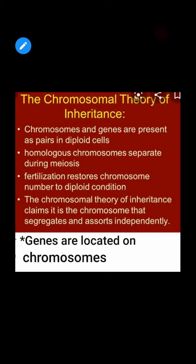Let's discuss the points of the chromosomal theory of inheritance. The first point is that chromosomes and genes are present as pairs in diploid cells — chromosomes always appear in homologous pairs, with the same size, shape, and structure.